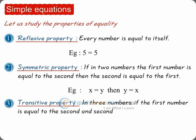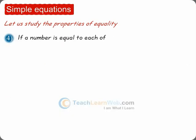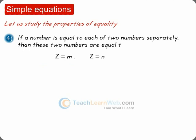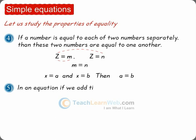Transitive property: in three numbers, if the first number equals the second and the second is equal to the third, then the first number is equal to the third. If a equals b and b equals c, then a equals c. Also, if a number is equal to each of two numbers separately, then those two numbers are equal to one another: if x equals a and x equals b, then a equals b.